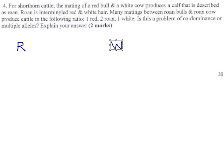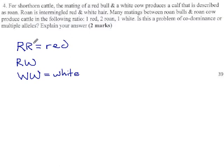When you have RR, that gives you red, not surprisingly, and when you have WW, that gives you white. But when you have one of each, neither one of them overrides the other. You don't get red or white, you get roan.